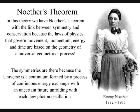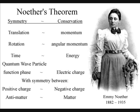Noether's theorem is amazing because it is not just beautiful, it is also useful. What the theorem says is that if we find a symmetry in nature, there must also be a corresponding conserved quantity somewhere. And we can also use the theorem backwards as well — if we find something has been conserved, we know that there must be some underlying symmetry that caused the conservation.